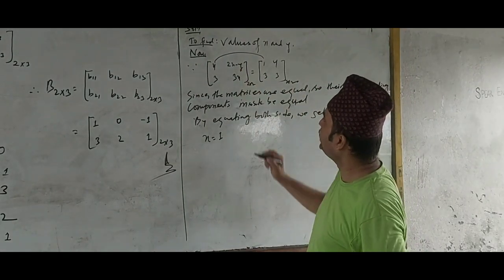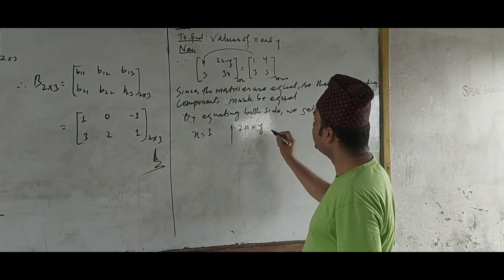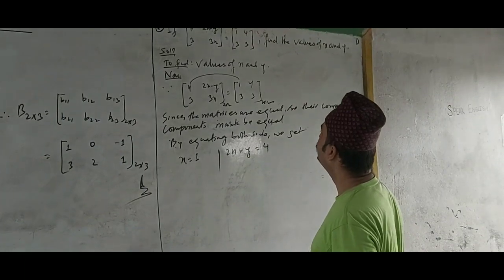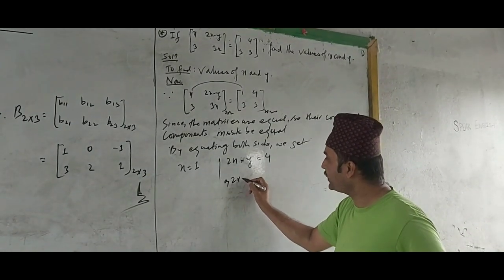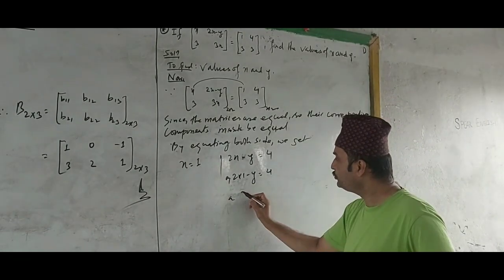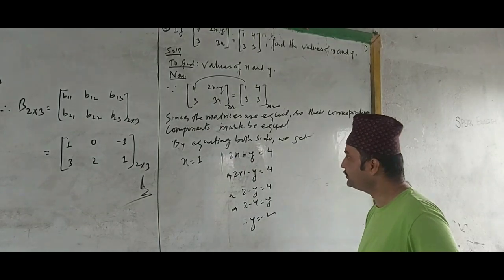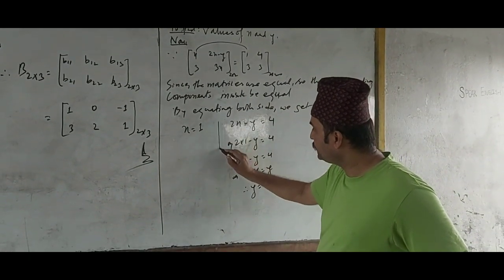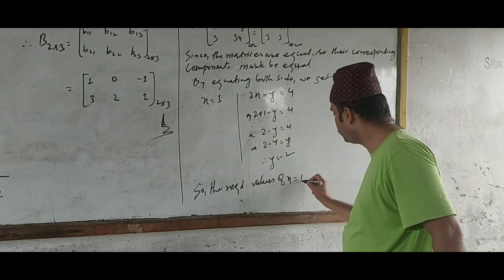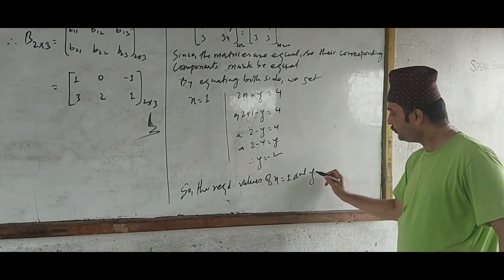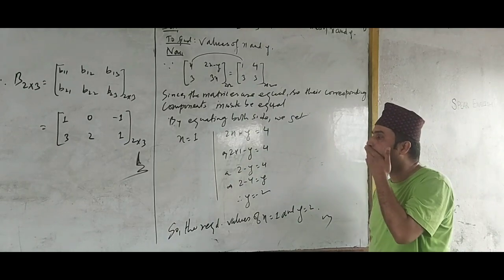The value of x is 1. Substituting x equals 1 into 2x minus y equals 4: 2 into 1 minus y equals 4, so 2 minus y equals 4, therefore 2 minus 4 equals y, so y equals minus 2. The required values are x equals 1 and y equals minus 2. In this way, for equal matrices, we equate corresponding components to find x and y.